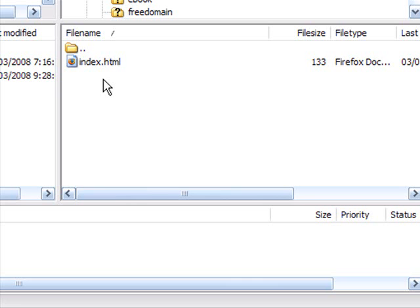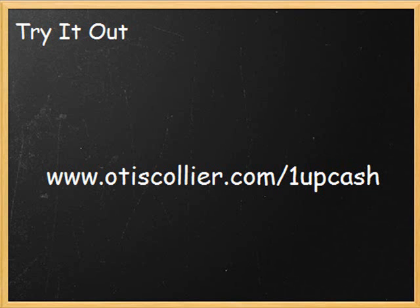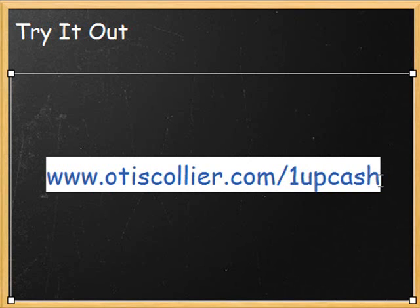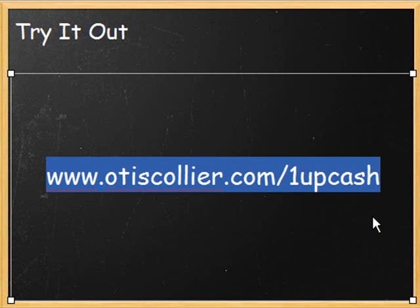That is critical — you must do that. Create the folder first, then upload the file into the folder. Once you do that, you'll be able to go to the web address — OtisCollier.com forward slash oneUpCash — and it will redirect you to another page. If you want to try that out, just type in that URL and you'll see that it actually works.